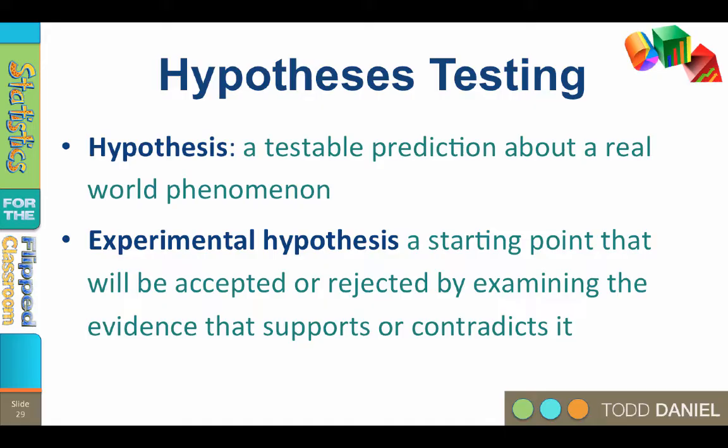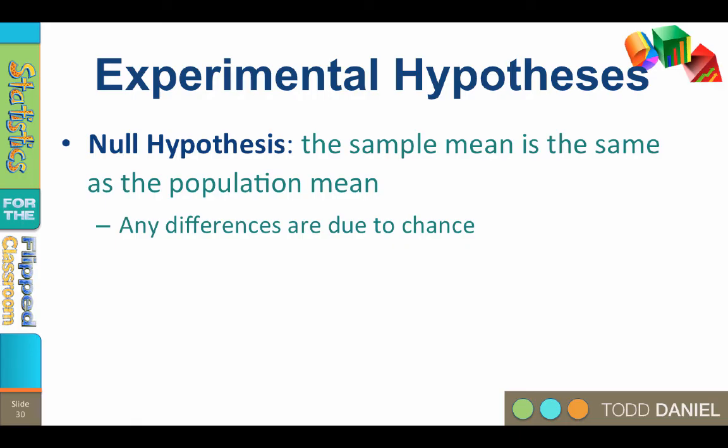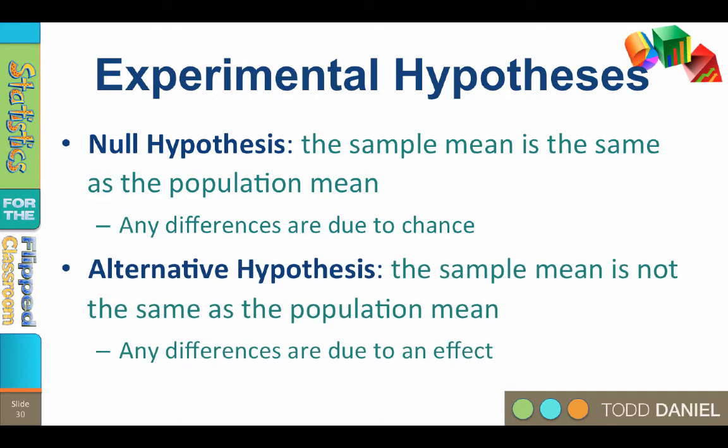Now, later I'm going to explain how we never really accept a hypothesis, but for now we're going to use accept and reject for simplicity. There are two experimental hypotheses: the null hypothesis and the alternative hypothesis. The null hypothesis states that the sample mean is the same as the population mean, so any differences we do observe are due to chance. The alternative hypothesis states that the sample mean is not the same as the population mean, so any differences are due to an effect.